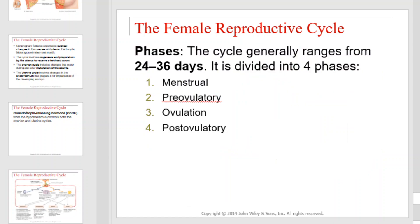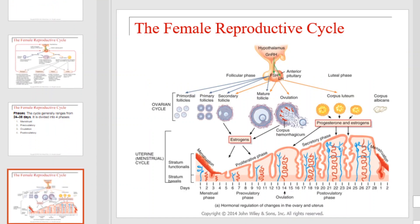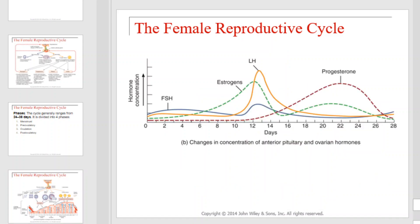The cycle generally ranges from 24 to 36 days and is divided into four phases: the menstrual, pre-ovulatory, ovulation, and post-ovulatory phases. This diagram illustrates each phase in a graphic sense, indicating the changes in the uterus as well as the development of the egg. This graph illustrates the hormonal changes that occur along the same time frame.